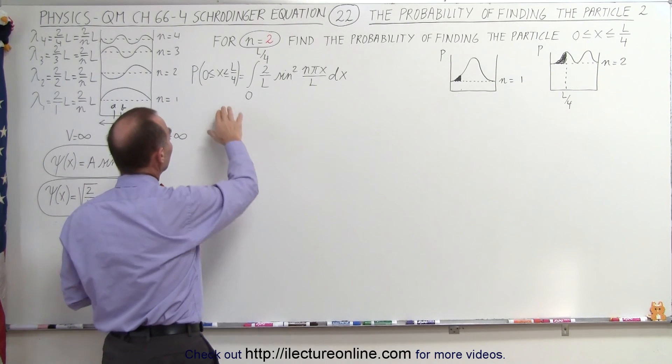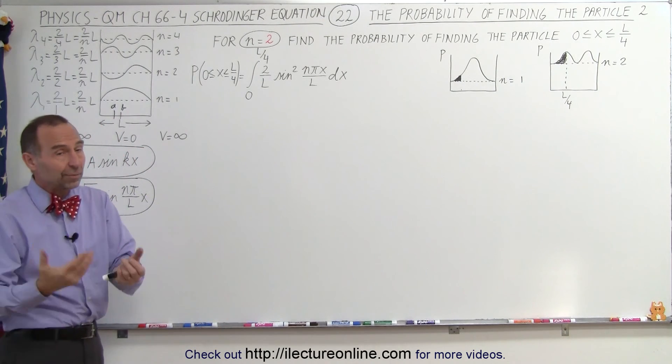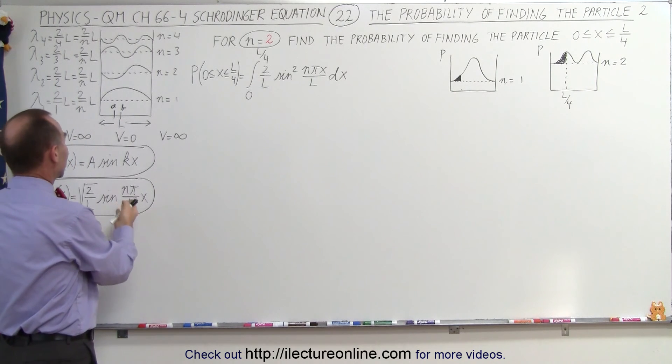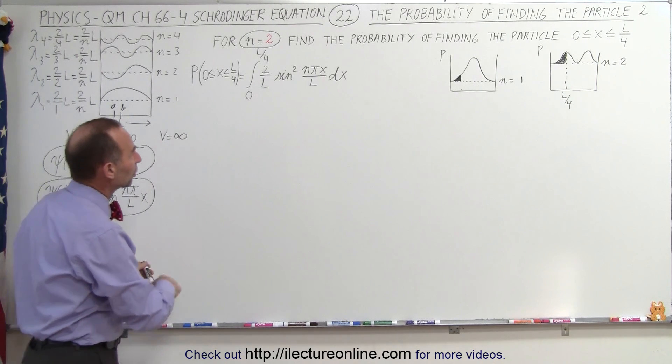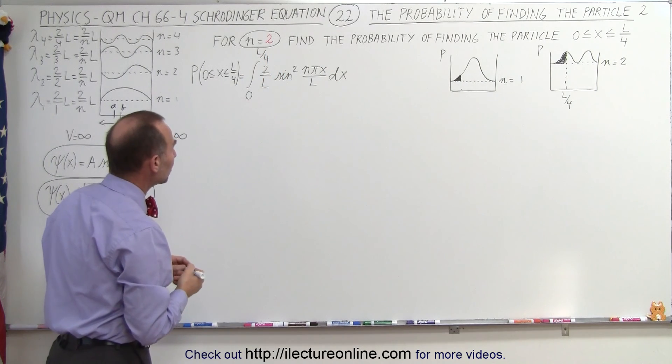So again we're going to integrate over the wave function squared because there's no imaginary part, so it's simply the wave function squared. Otherwise we would have to multiply the wave function by its complex conjugate.